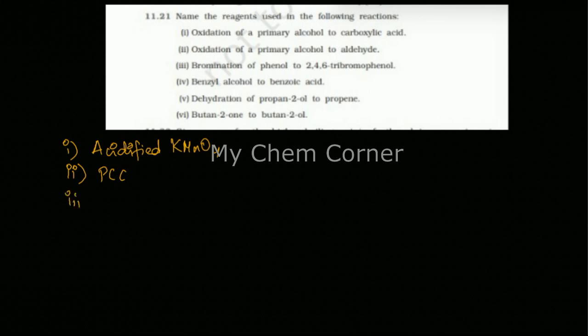Third one is bromination of phenol to form 2,4,6-tribromophenol. This is the substitution where three bromine atoms are there on the phenol to form a product. So here this is just going to be bromine water.